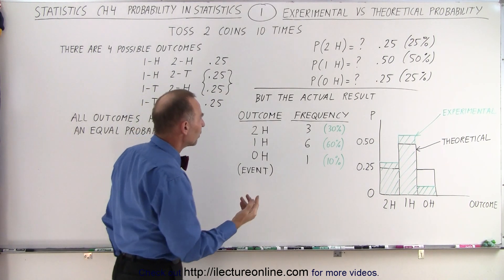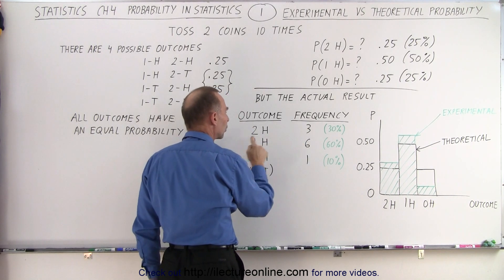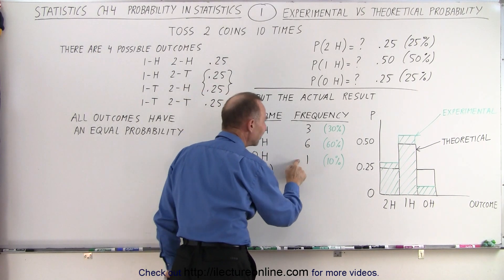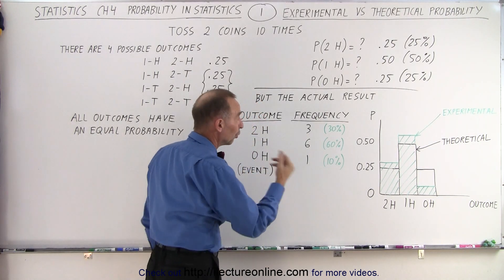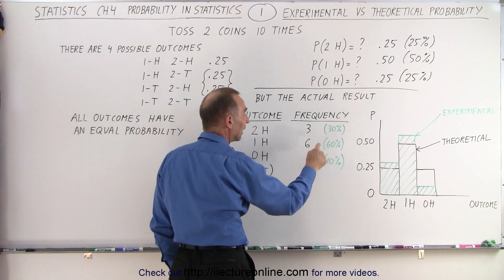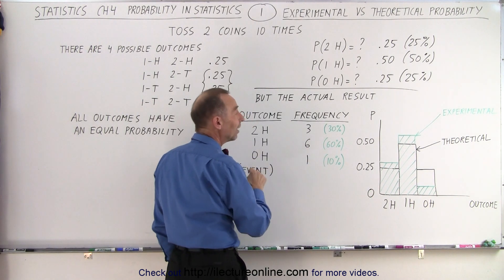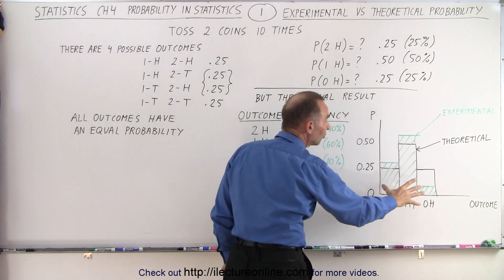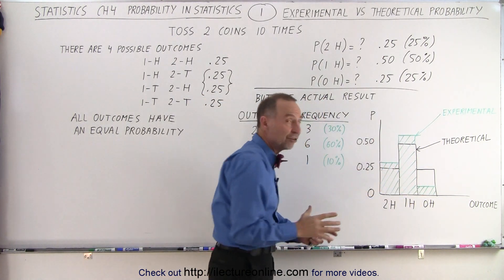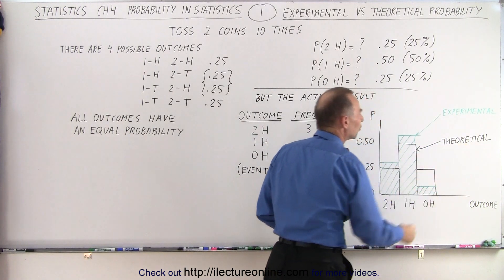Experimentally, it turned out, the two heads occurred three times, one head occurred six times, and no heads occurred one time. In other words, 30% of the time, we got two heads, 60% of the time, we got one head, and 10% of the time, we got zero heads. And if I graph that, you can see that there was a significant difference between the experimental result and the theoretical results.